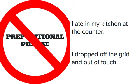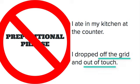The second example: 'I dropped off the grid and out of touch.' Once again, we've just got two prepositional phrases. We didn't actually drop anything. Instead, we dropped off the grid and out of touch. 'Off the grid' and 'out of touch' are prepositional phrases. So in neither one of these sentences do we have a direct object.